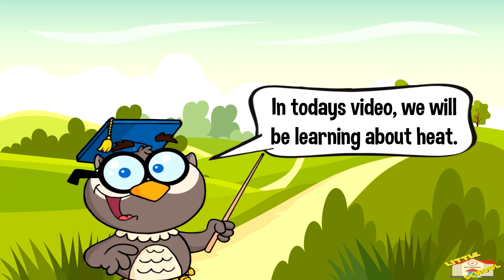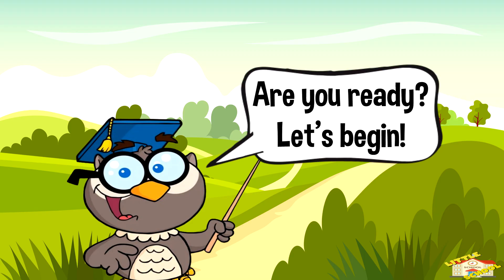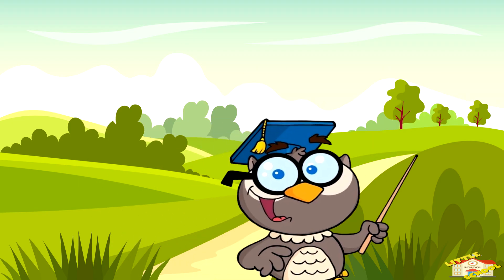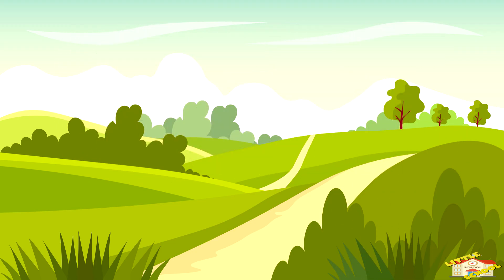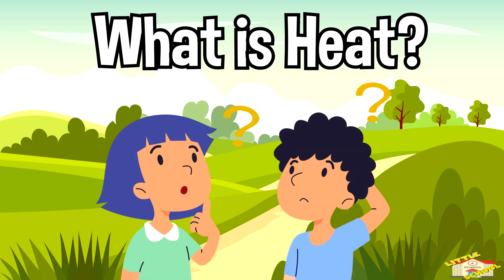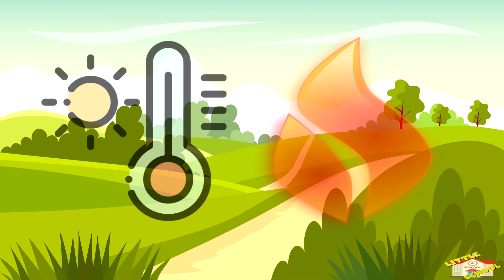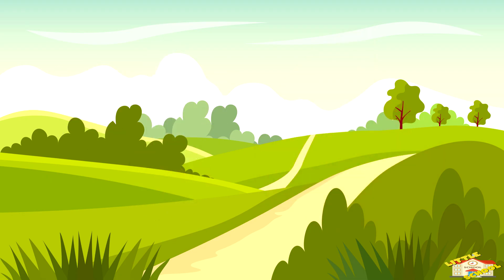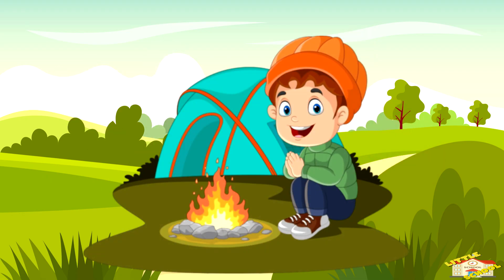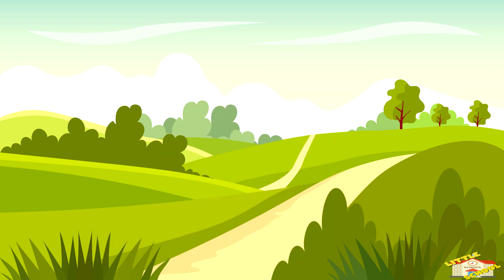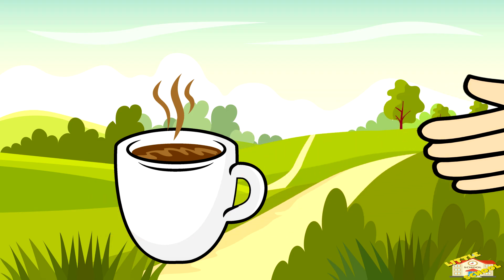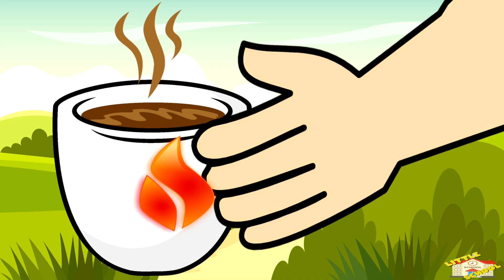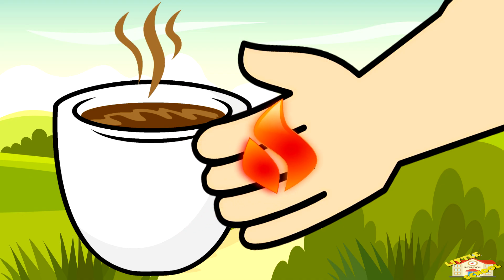Hey kids! In today's video we will be learning about heat. Are you ready? Let's begin. What is heat? Heat is a form of energy — it's what makes things feel warm or hot. For example, when you touch a mug of hot chocolate, the warmth you feel is heat. Heat is energy moving from something hot, like the mug, to something cooler, like your hand.